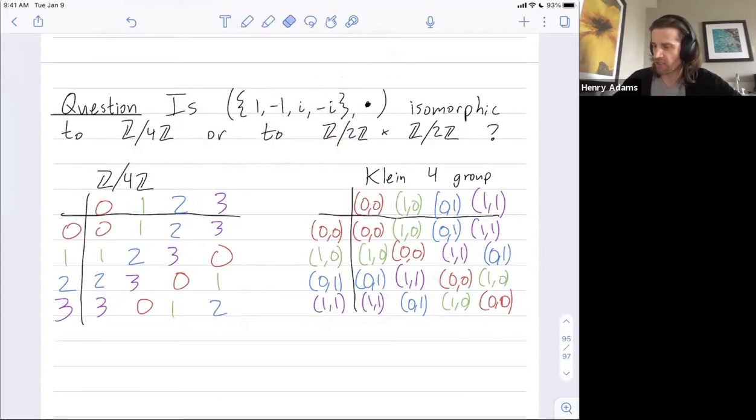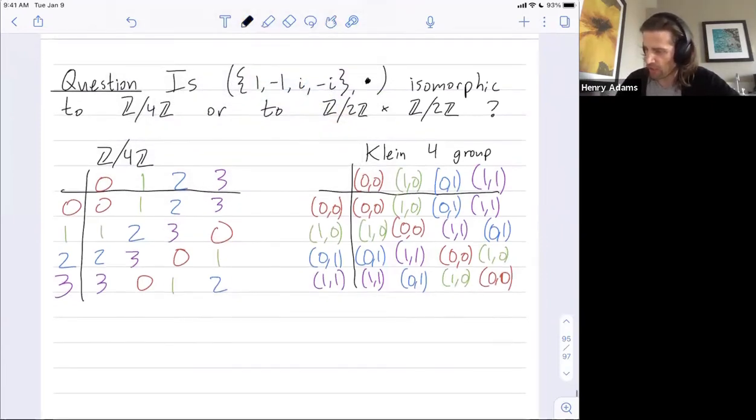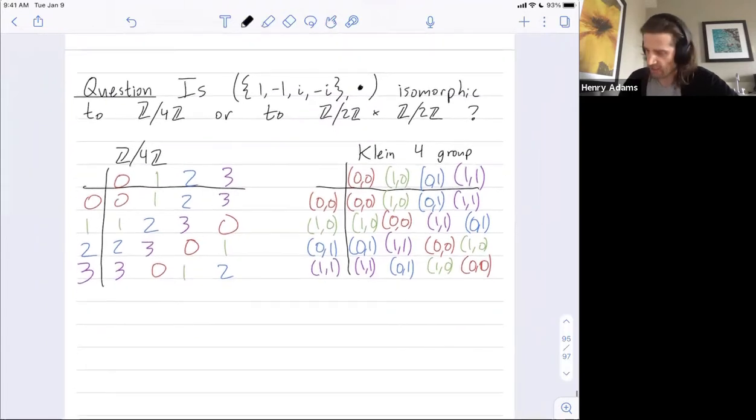And the group operation is going to be multiplication. So let's just try to draw the multiplication table for this new group of size 4 and see what we think it's isomorphic to. I'm going to try to fool you.